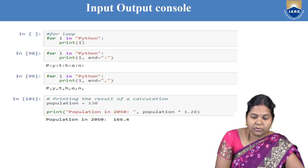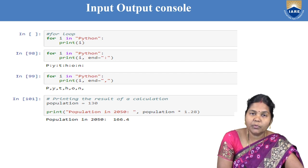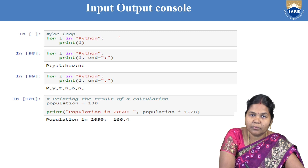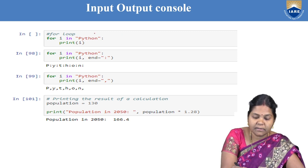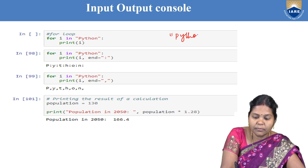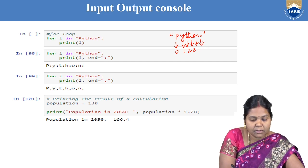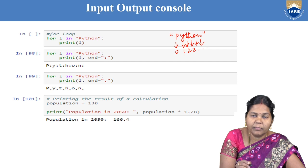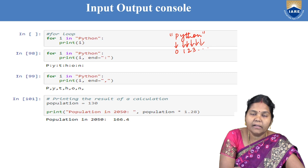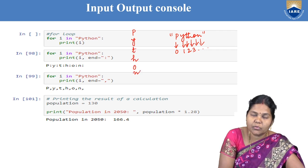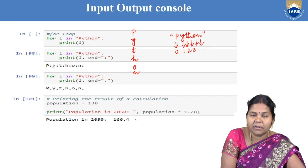If you want to iterate using a loop, you can also iterate over strings. For example, using a for loop — for i in 'Python': print(i) — it will iterate from the 0th index. In the string 'Python', P is at index 0, Y at index 1, T at index 2, H at index 3, and so on. The output will be P, Y, T, H, O, N printed on separate lines, since by default the newline character is used.